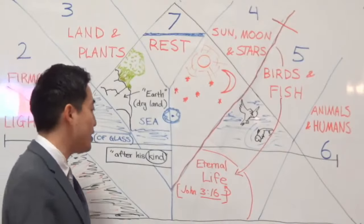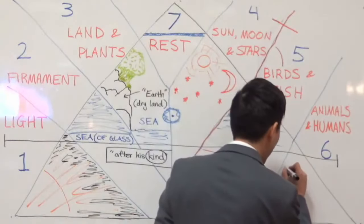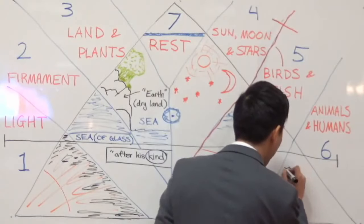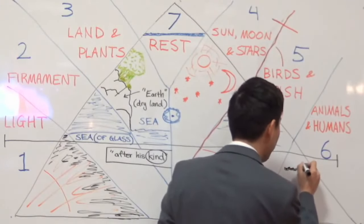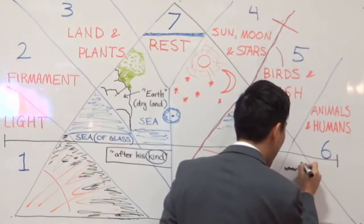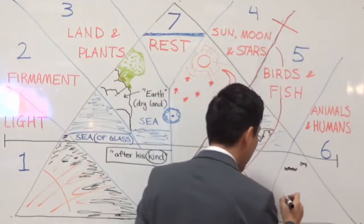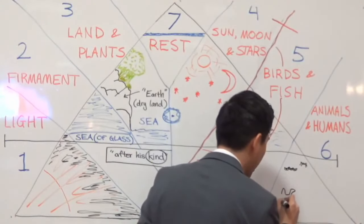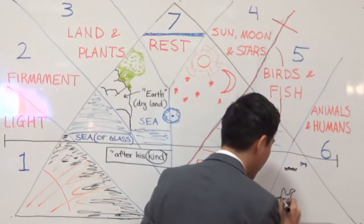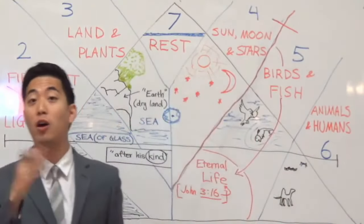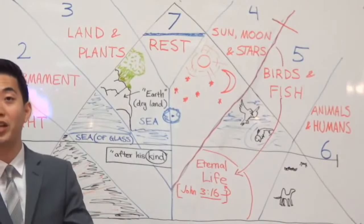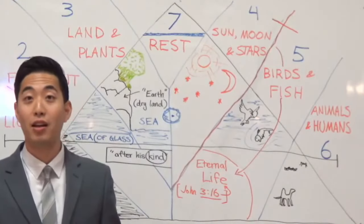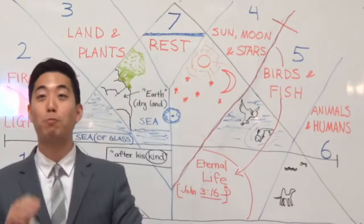Notice that insects, creeping things — those cockroaches you love today — all these creeping things were created at the same day as your dogs and cats. That's important because you now know more than PhD scientists — they thought insects were billions of years older than the current dogs, cats, and monkeys today. The Lord says that's not a problem — he'll just put them all together.